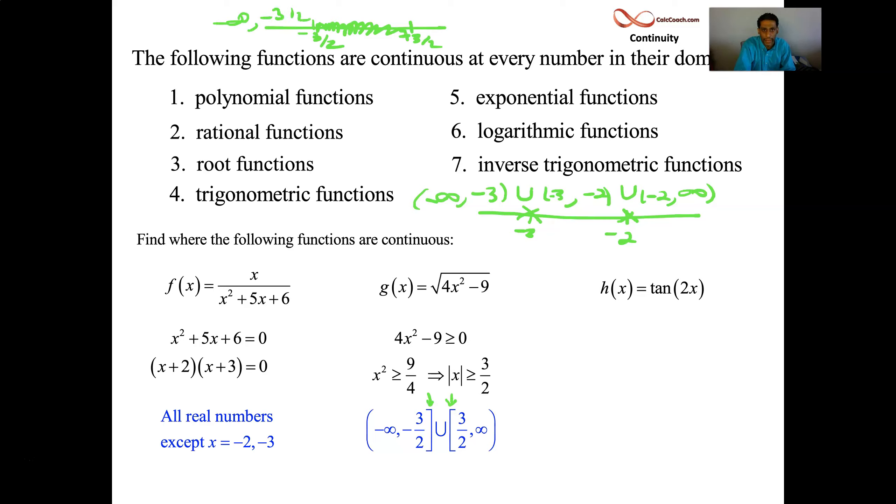And you go from minus infinity up to negative 3 halves. And you go from 3 halves up to infinity with square brackets on these guys. OK, great. How about tan of 2x?